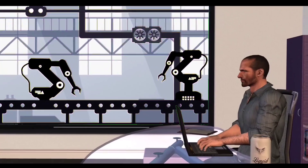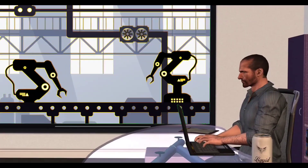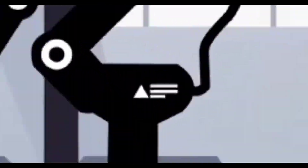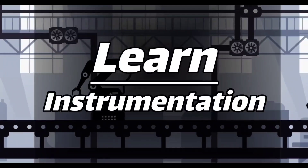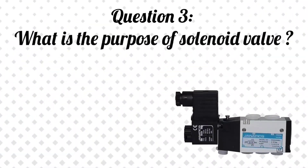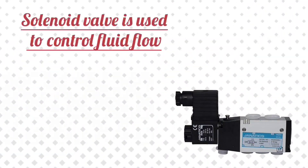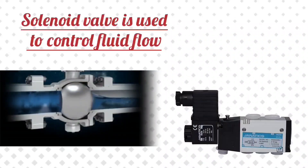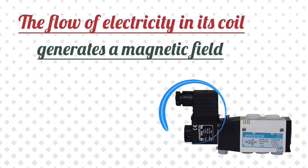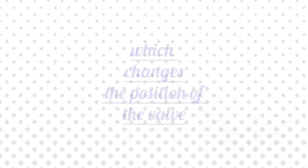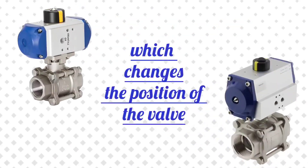Question 3: What is the purpose of a solenoid valve? Answer: A solenoid valve is used to control fluid flow. The flow of electricity in its coil generates a magnetic field, which changes the position of the valve.